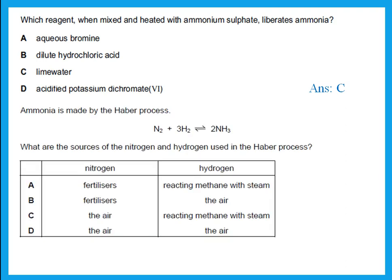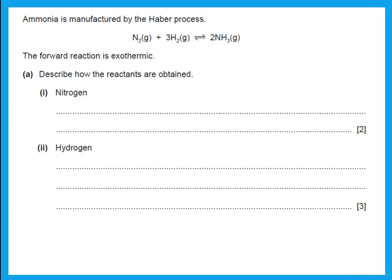Ammonia is made by the Haber process. What are the sources of nitrogen and hydrogen in the Haber process? We get nitrogen from the air. And we get hydrogen by reacting methane with steam, or by cracking of a hydrocarbon — that is what gives hydrogen gas. So reacting methane with steam is a method of getting hydrogen.